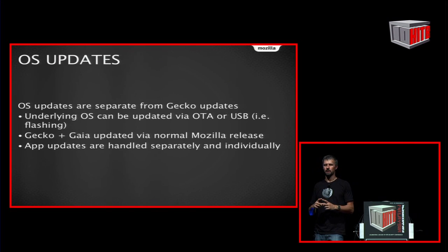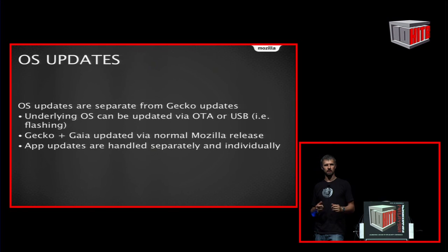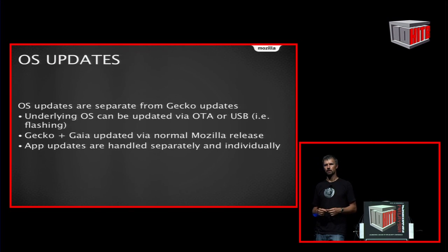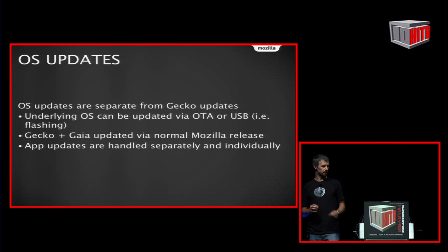There's an OS update model that differs depending on layer. The underlying GONK Linux layer is updated via OTA over-the-air updates or USB flashing. Gecko and Gaia follow our normal Firefox release process — OTA auto-updates or direct image flashing. App updates are handled individually — apps don't have to come from a specific app store, so each app can be responsible for its own update process and define where updates are hosted.